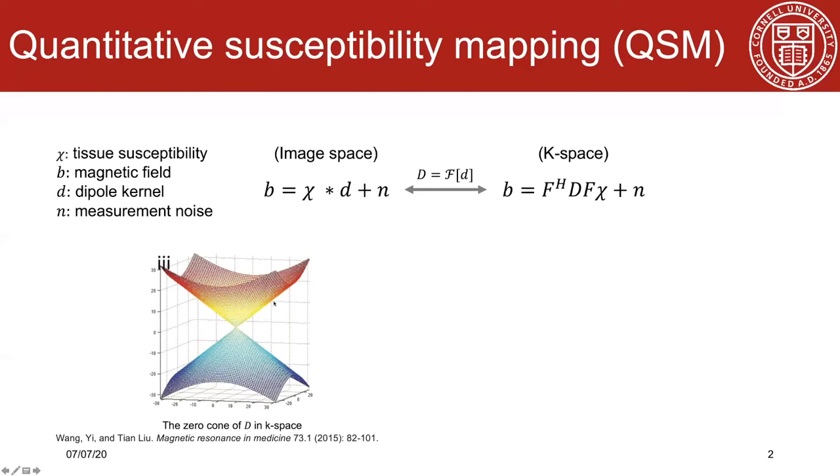This ill-posedness is shown in this figure. It shows the zero surface cone of the dipole kernel in k-space. So the k-space point in this cone surface causes division by zero when the deconvolution is performed in k-space.